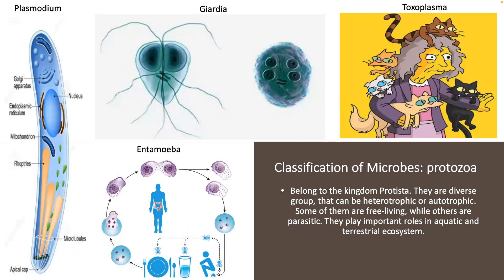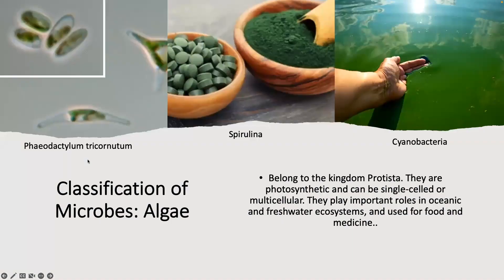Protists — from the kingdom Protista, they can be heterotrophic or autotrophic. Some of them are free living, while others are parasites. They're common in human health and classic examples in genetics. Everybody's favorite is Toxoplasma — the crazy cat lady organism. One of the life cycle stages for this organism is in cats, and it also is in humans. There have been some anecdotal studies suggesting that when people collect cats, it may be the influence of Toxoplasma saying 'I need to jump to the next host' — hence the reason for the crazy cat lady, or man.